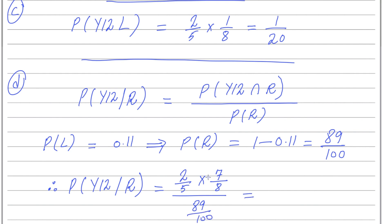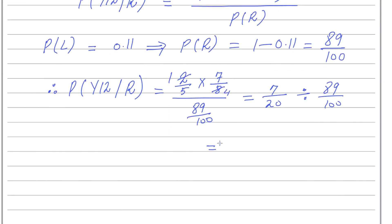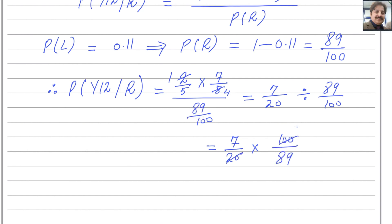Simplifying: 2/5 × 7/8 = 14/40 = 7/20. Then divide by 89/100, which means multiply by 100/89. So (7/20) × (100/89) = 700/1780 = 35/89. So 35 over 89 is the answer for part D.